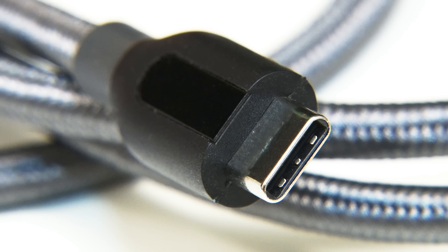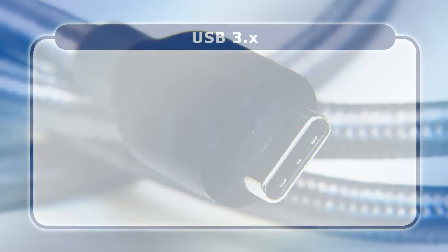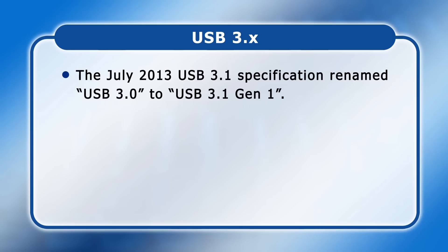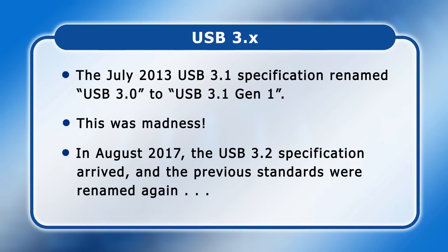To add further confusion, the USB Implementers Forum made the bizarre decision to rename USB 3.0 as USB 3.1 Gen 1. Given that they didn't possess the magical power to remove the name USB 3.0 from every previous product and manual already released, this was clearly madness. And madness that was infectious, as in August 2017 the Forum again played its renaming game with the specification of USB 3.2.